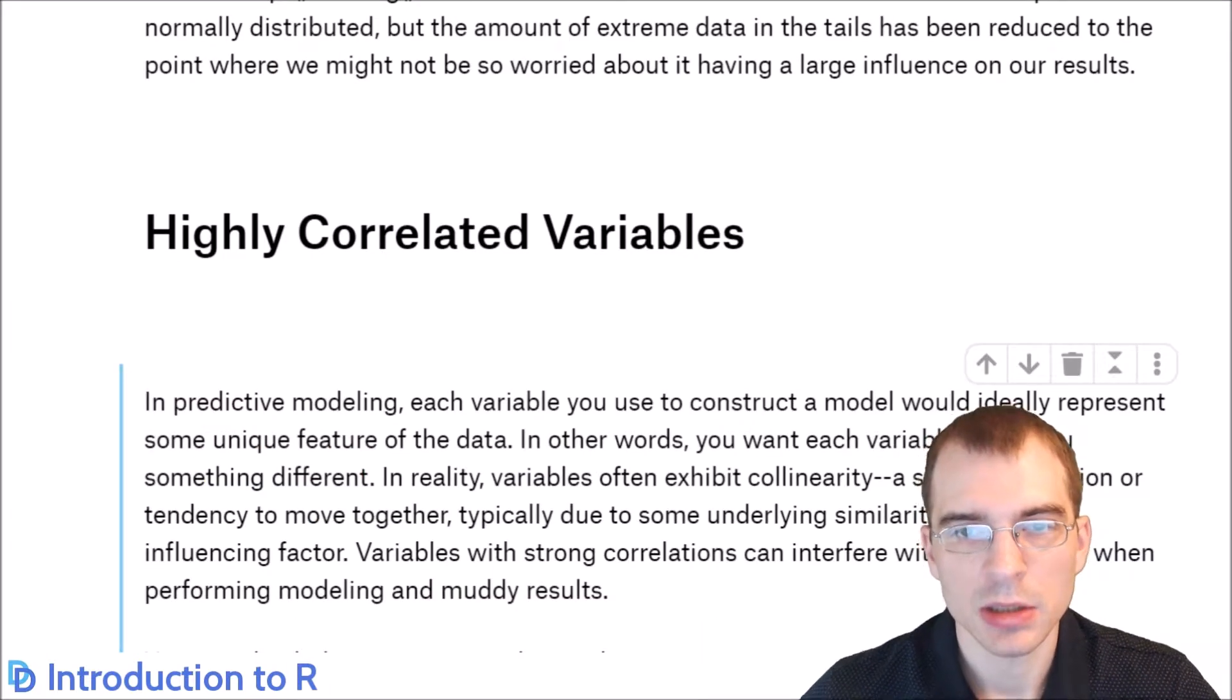Another thing to consider when you're working with numeric data is whether you have any highly correlated variables. That means variables that tend to vary very closely with one another, so they're essentially telling you very similar things. Including two variables that are highly correlated together in certain models will reduce performance. So it can be useful to identify highly correlated variables and think about doing something to rectify that problem, such as removing one of them. We'll show how you might go about looking at whether variables are highly correlated and consider a couple of things you can do with them.